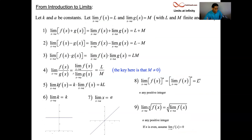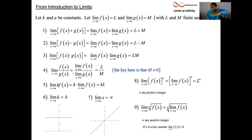In the previous section we looked at limit laws: the limit of a sum is the sum of the limits (provided they exist and are finite), the limit of a difference is the difference of the limits, the limit of a product is the product of the limits, and the limit of a quotient is the quotient of the limits (provided the denominator limit is not zero). Also, the limit of a constant times a function is the constant times the limit, the limit of a constant is that constant, and the limit of x as x goes to a is just a. And if a function is raised to a power, you can bring the limit inside, take that limit, and raise the result to that power.